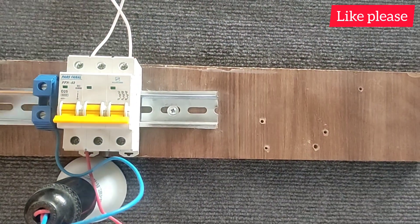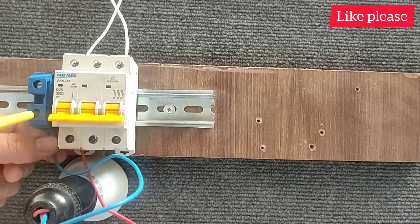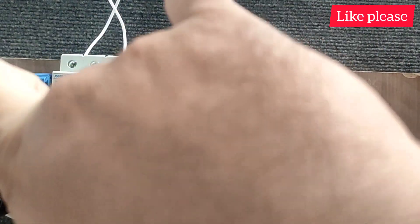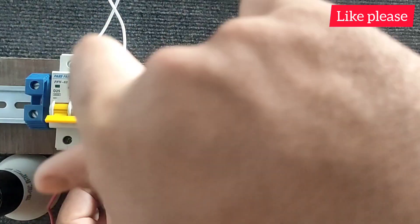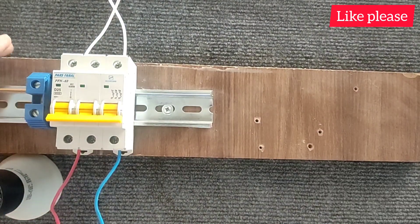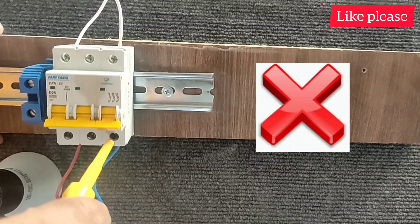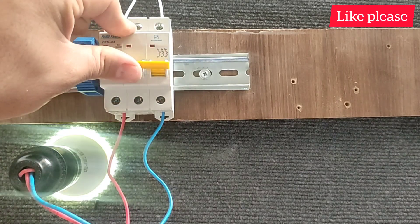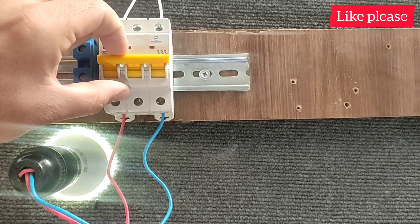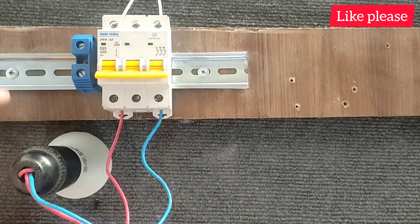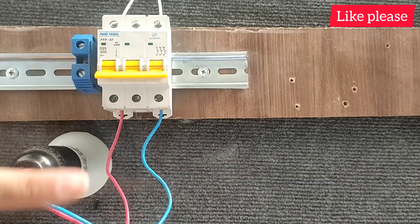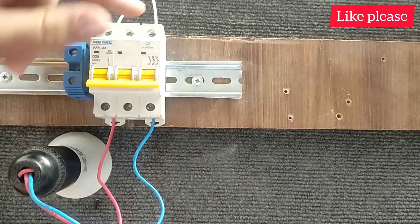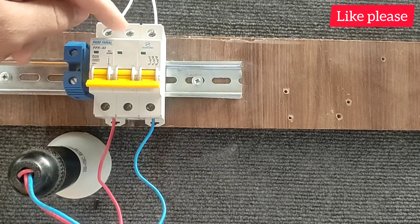The second method is to connect the phase wire to one blade and the null wire to another blade. This method is better than the previous method because it involves two blades of the switch and the switch performs better in short circuit. But this method is also not complete because one of the blades is empty. In this case the switch doesn't work well.